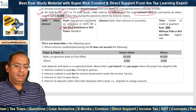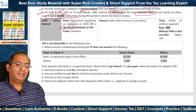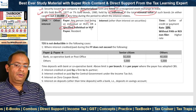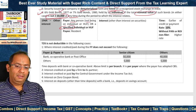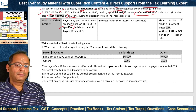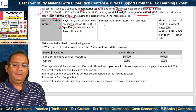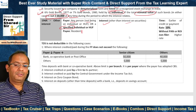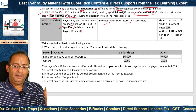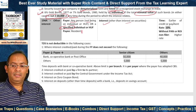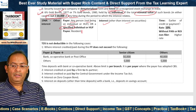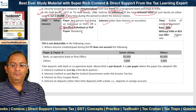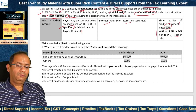Section 194A applies where the payer is a specified individual or HUF or any other person. The payee should be a resident and the specified payment is interest other than interest on securities. TDS is to be deducted at the time of the earlier of credit or payment at the rate of 10%, and there is a higher rate for without-PAN or ROI non-filer cases.